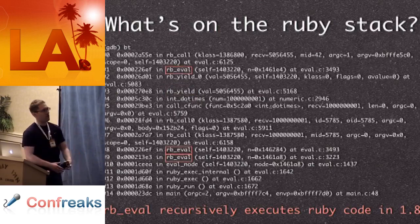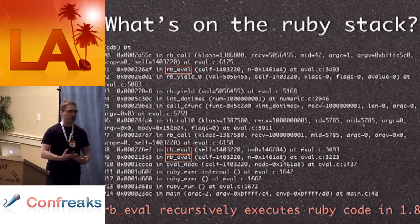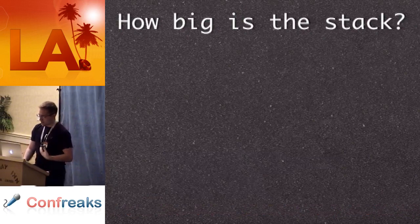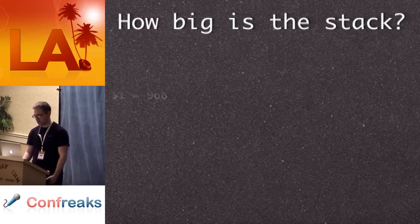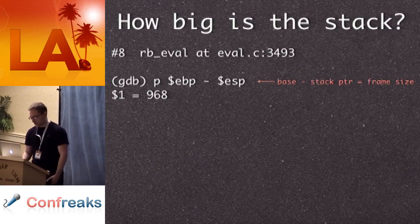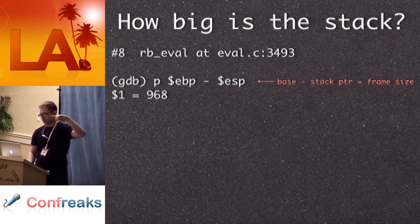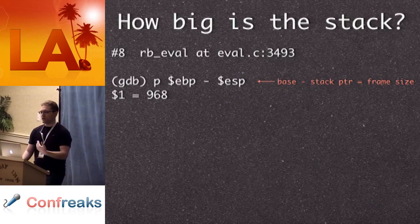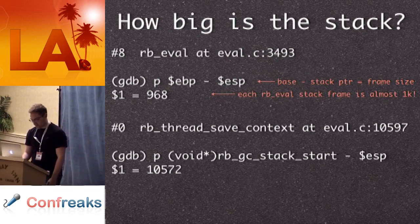It turns out rb_eval evaluates code in your Ruby program and calls itself recursively throughout the execution of your program. We want to know how big these stack frames are. In GDB, you can get the base pointer for the current stack frame and subtract from it the bottom of the stack (ESP — just two CPU registers). The printout comes back: 968 bytes. So each rb_eval stack frame is almost one kilobyte — a large amount of space to be copying back and forth.